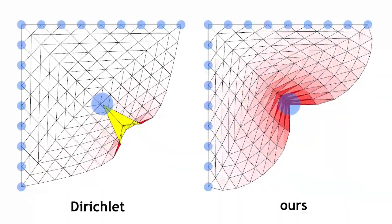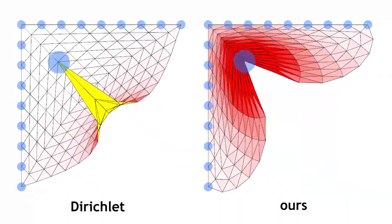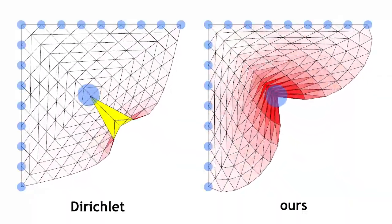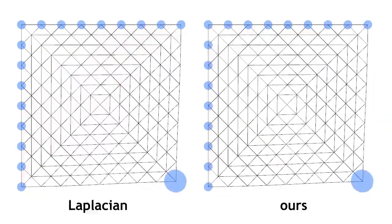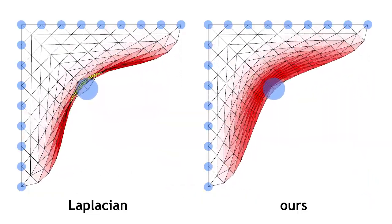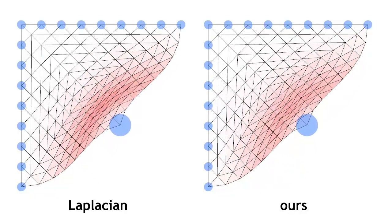Linear deformation energies introduce inverted elements even for simple deformations. With our algorithm, we prevent them while being able to interactively control the deformation. The mesh elements colored in yellow are inverted.